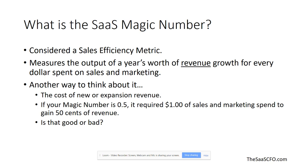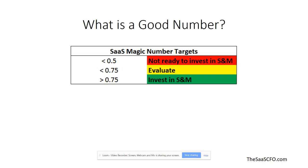So if your magic number is 0.5, it required one dollar of sales and marketing spend to achieve 50 cents of annualized revenue gain. Is that good or bad? This chart shows that a magic number of less than 0.5 means you're not ready to invest in sales and marketing — you should reconsider your spend because it is not efficient. Less than 0.75, you're getting close — evaluate. Greater than 0.75, you are gaining revenue efficiently and you should invest more in sales and marketing.